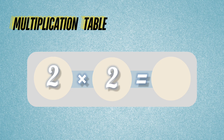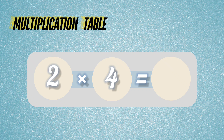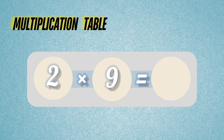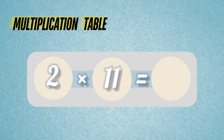2 times 2 is... 2 times 3 is... 2 times 4 is... 2 times 5 is... 2 times 6 is... 2 times 7 is... 2 times 8 is... 2 times 9 is... 2 times 10 is... 2 times 11 is... 2 times 12 is... Let's do this.